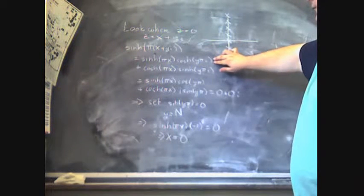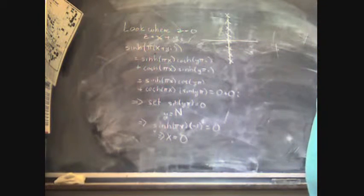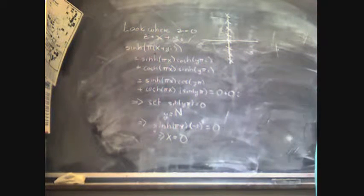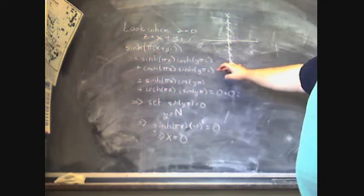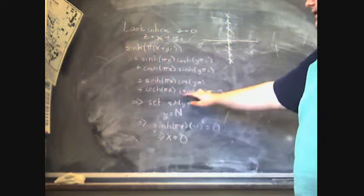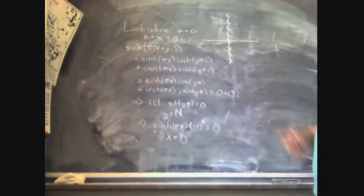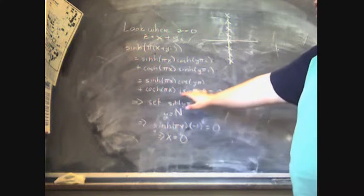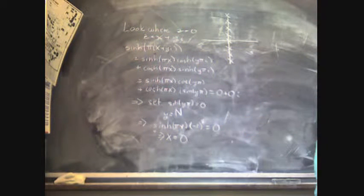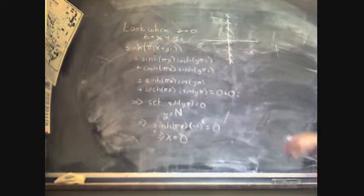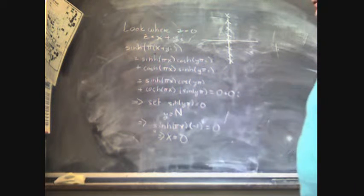So you have sinh of one plus cosh of the other plus cosh of the first times the sinh of the second. Here we have cosh of yπi, which is actually the same as the cosine of yπ. And the sinh of yπi is i times the sinh of yπ. We want both the real and the imaginary parts equal zero.